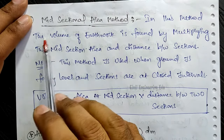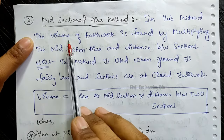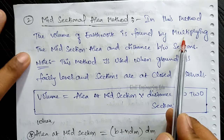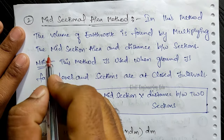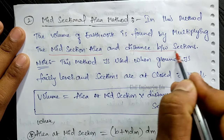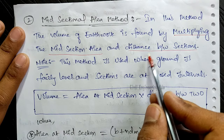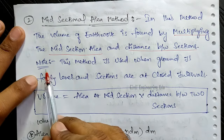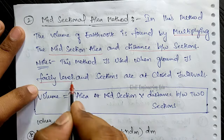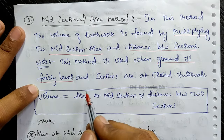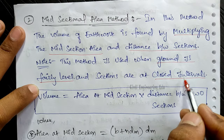The second method is the mid-sectional area method. In this method, the volume of earthwork is found by multiplying the mid-sectional area by the distance between two sections. There is an important note: this method is used when the ground is fairly level and the sections are at close intervals. Both conditions — fairly level ground and closely spaced sections — must be satisfied.